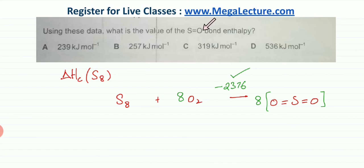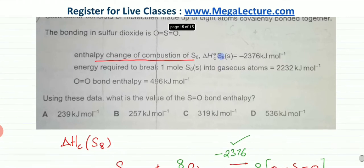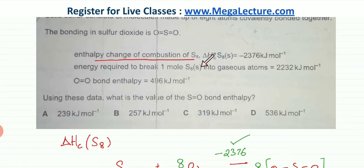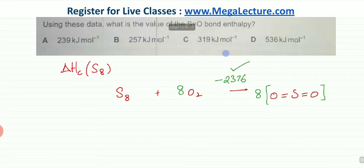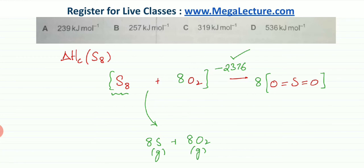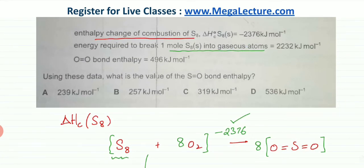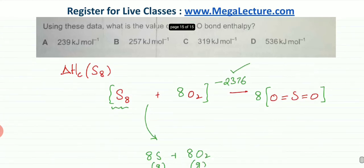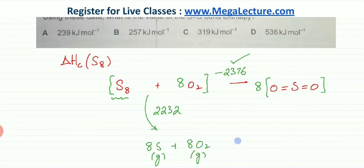We now create a Hess cycle to find the S=O bond energy. From the reactants as our starting point, we take an alternative path: breaking S₈ into gaseous atoms. This gives 8 sulphur gaseous atoms, leaving the 8 oxygen molecules as they are. The energy required to break one mole of S₈ into gaseous atoms is given as 2232 kJ/mol.